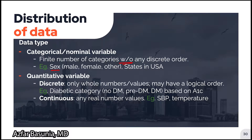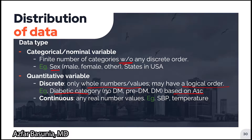Quantitative variables can be discrete or continuous. Discrete quantitative variables only accept whole numbers or values and may have a logical order. An example of this would be defining the diabetes category based on the patient's A1c. A patient may be categorized as non-diabetic if their A1c falls below 5.7, pre-diabetic if their A1c is between 5.7 and 6.4, and diabetic if their A1c is greater than or equal to 6.5.